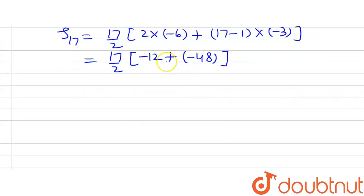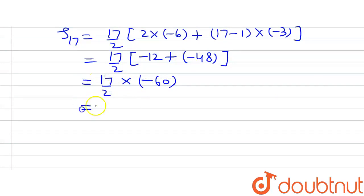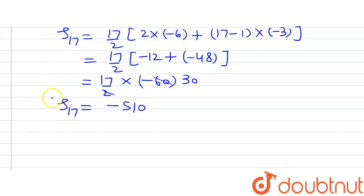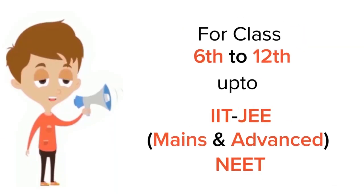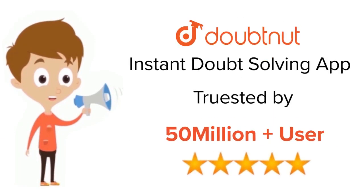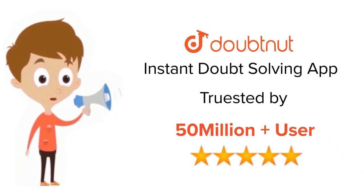Solving further: −12 − 48 = −60, so we get 17/2 × (−60). Dividing 60 by 2 gives 30, and 17 × 30 = 510. With the minus sign, the sum of the first 17 terms of the AP is −510. For class 6 to 12, IIT JEE and NEET level problems, trusted by more than 5 crore students — download the DoubtNet app today.